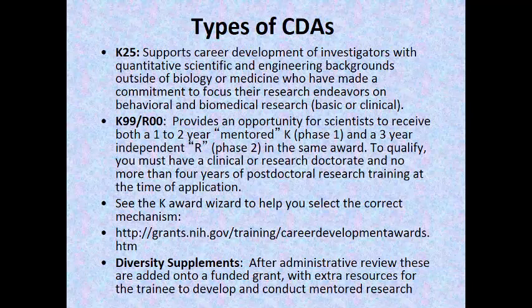The K99/R00 is a bridging grant — a relatively new mechanism. It provides an opportunity for scientists to get one to two years of the mentored K phase and then three years of independent work all in the same grant. To qualify, you must have a clinical or research doctorate and no more than four years of postdoctoral research training at the time of application. All these different awards have various eligibility quirks.